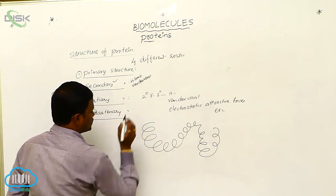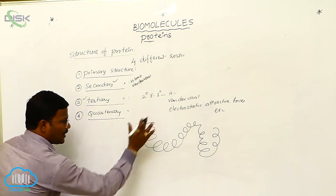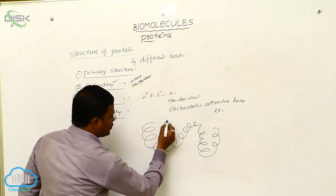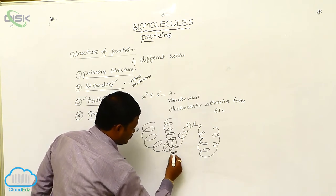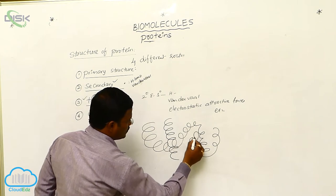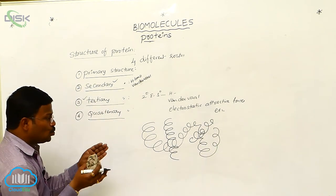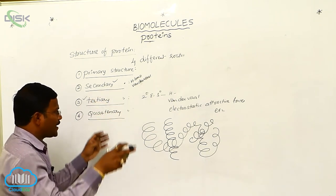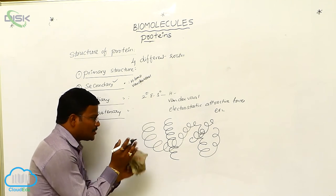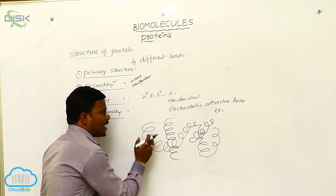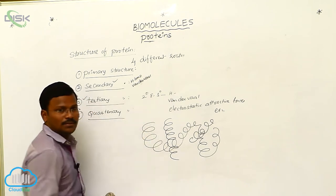In quaternary structure, when two or more polypeptide chains are arranged together to produce a protein, the spatial relationship between one polypeptide and another polypeptide is explained in the quaternary structure.